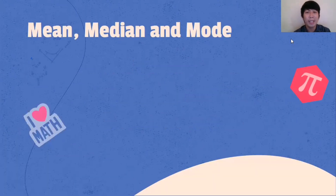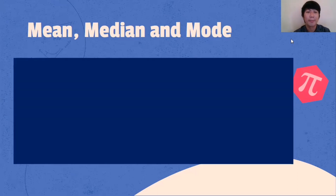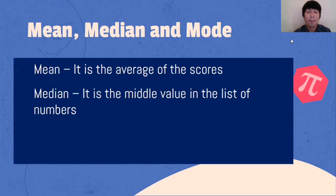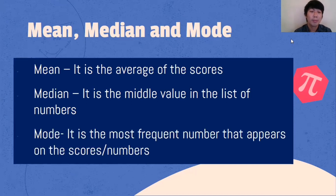Let's discuss mean, median, and mode. What is mean? Mean — it is the average of the scores. What is median? Median — it is the middle value in the list of numbers. Mode — it is the most frequent number that appears on the scores.